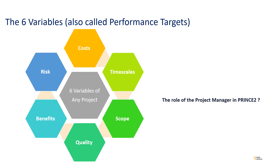Once the plan is defined, the project manager must constantly monitor results to ensure they match the project plan, keeping all six variables within the project's boundaries. If the project deviates from the plan, you need to decide how to handle issues, declare exceptions, and escalate to stakeholders for resolution. Time and cost also require constant monitoring to ensure the product is delivered in less time or at lower cost.